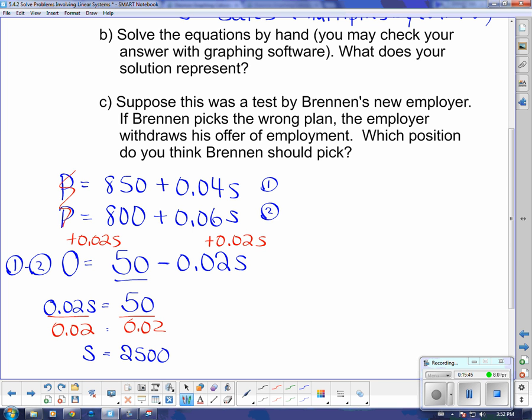And if I want the next one, I'm going to say sub S into equation one, so we can figure out what P is. P equals 850 plus 0.04S. But I know what the S is. It's the $2,500. So I replace that S with $2,500. And then I can just punch that into my calculator. I get 850 plus 0.04 times 2,500. And that gives me $950.